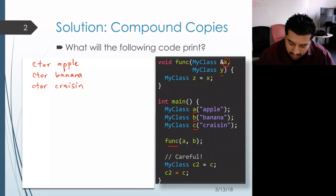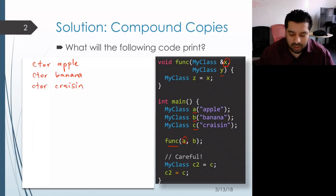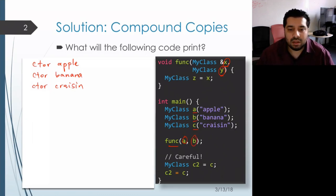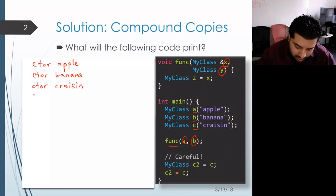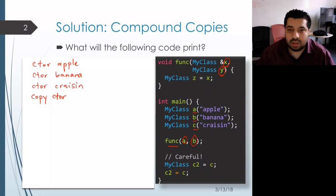On the other hand, y is passed by value, which means it's going to be initialized by copying from the object b in main. Since it's initialization, that means we have a call to the copy constructor, so we get 'copy ctor' and then the string that's saved inside of b, which is 'banana'.